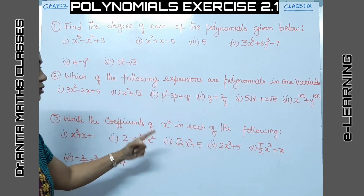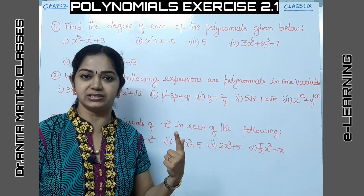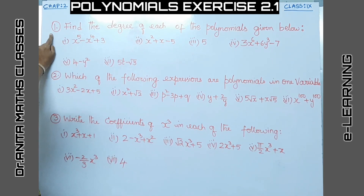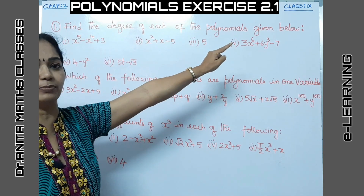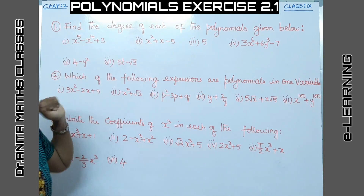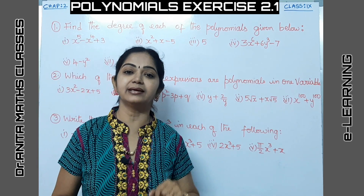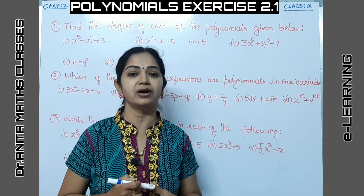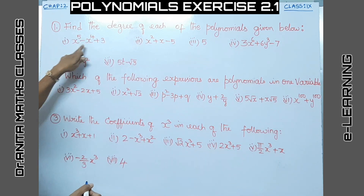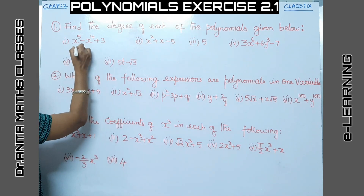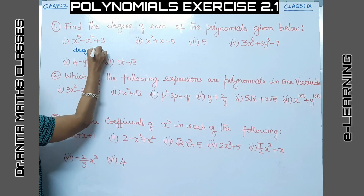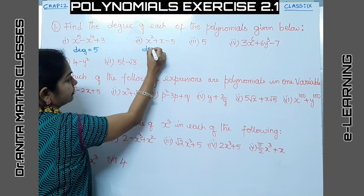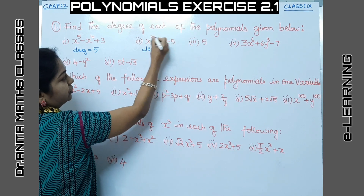Almost all the problems are one-mark questions, so I have noted down a few problems from the exercise. Let's start — find the degree of each of the polynomials given below. The degree of any polynomial is nothing but the highest power of the variable. Here the variable is x throughout, so the degree of the first polynomial is 5 because the highest power is 5.